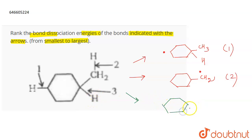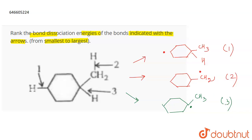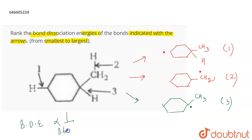Now if the third bond is broken, a CH3 free radical is going to be formed. So bond three is dissociated and these are the three free radicals that are formed.